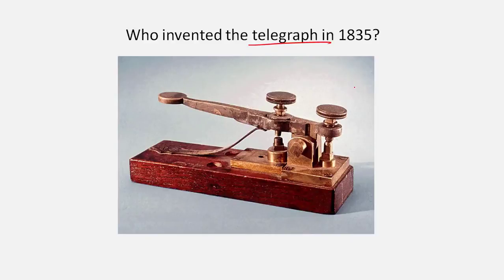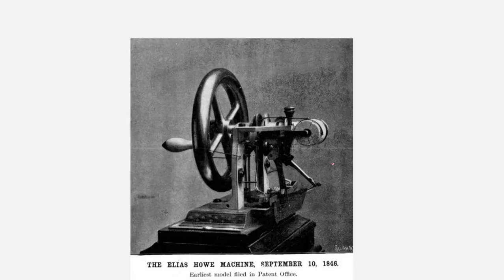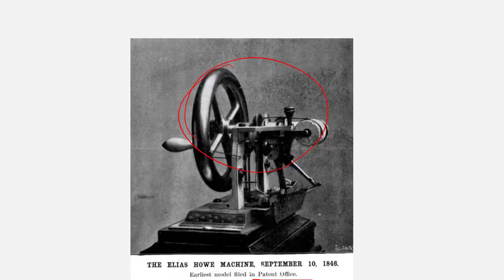Another important invention was the telegraph. If you wanted to send a message across 100 kilometers, it could take approximately one day earlier; by the 1850s–1860s, telegraph lines were laid down in the oceans and a message could reach from London to New York within a few minutes. The common sewing machine was also invented — one of the first models was filed at a patent office in 1846 — so that anyone could now make and stitch clothes at home.